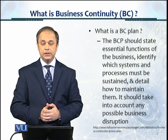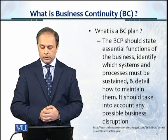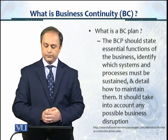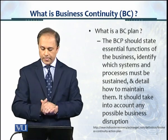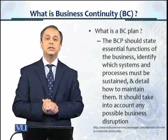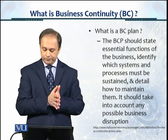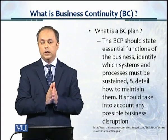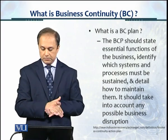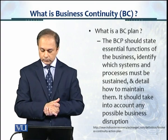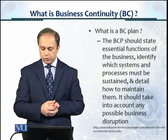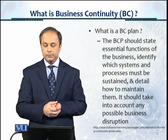The BCP, or business continuity plan, should state the essential functions of the business — what does a business do? It should identify which systems and processes must be sustained, which are the critical processes and functions, and if there is a disruption, which are the priority processes and systems that must be maintained and sustained, and detail how to maintain them in the event of a disruption. It should take into account any possible business disruption.